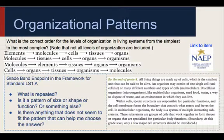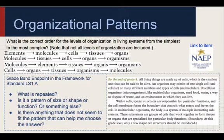An organism may consist of one single cell (unicellular) or many different numbers or types of cells (multicellular). Unicellular organisms like multicellular organisms need food, water, a way to dispose of waste, and an environment in which they can live. Within cells, special structures are responsible for particular functions and the cell membrane forms the boundary that controls what enters and leaves the cell. In multicellular organisms, the body is a system of multi-interacting subsystems — groups of cells that work together to form tissues or organs specialized for particular body functions.